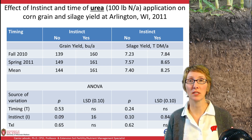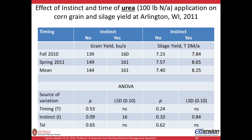Another study at Arlington looked at fall or spring application of 100 pounds of N per acre as urea — a somewhat N-deficient rate to better see differences with or without Instinct. We can see grain yield and silage yield results comparing Instinct no versus yes, and the mean of fall versus spring. The bottom line: there was a significant effect of Instinct on both grain yield and silage yield — it significantly increased both.